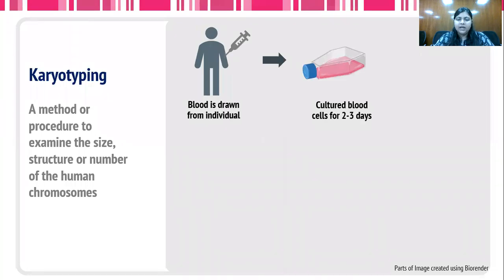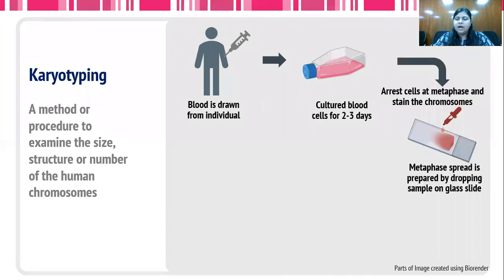Under this technique, blood is drawn from the individual and the blood cells are cultured for around 2 to 3 days. After that, the cells are arrested at the metaphase stage using chemicals such as colchicine, and the cells are then stained for further visualization.